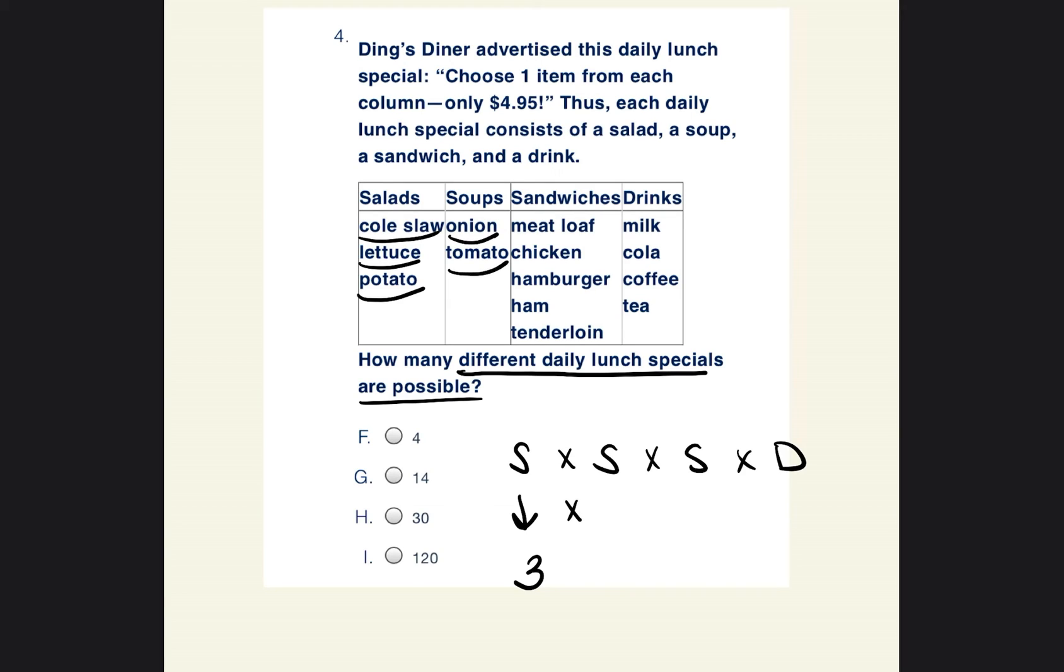Then there's two choices of soup, so then you would multiply that by two. Okay, and then sandwiches. There's meatloaf, chicken, hamburger, ham, tenderloin. So one, two, three, four, five. So you would multiply that by five. And then the drink choices is one, two, three, four. So there's four drink choices.